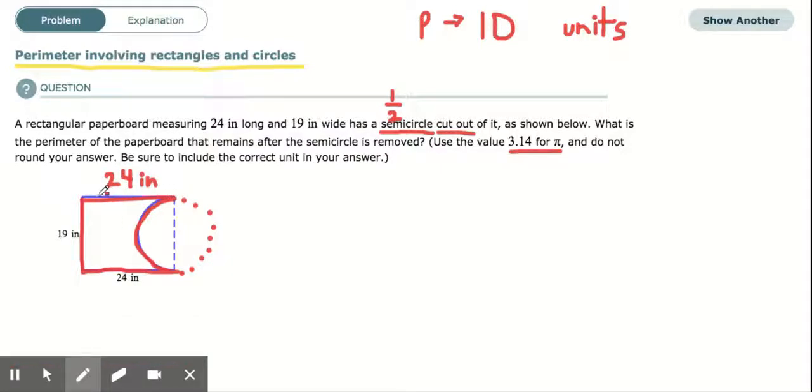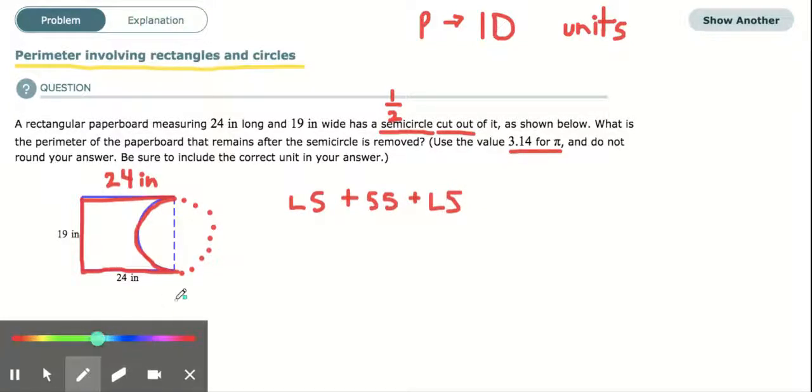What I want to do first is I want to just write it out in terms of all of the sides. So this side length is a long side, and then I'm going to add a short side. And then I'm going to add another long side. That'll take care of one, two, three. But then what else do I need to add? I need to add this. And that's not really a side. That I would probably call it a half of a circle. That's half of the circle.